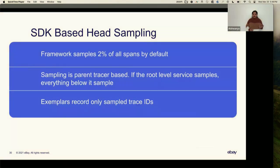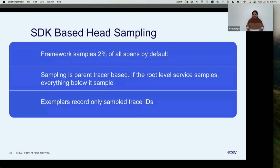We have adopted two types of sampling mechanisms. The first is SDK-based parent head sampling. When applications generate traces, even before sending them to the platform, they are sampled at 2% by default by the framework. The type of sampling is parent trace-based: the root service decides whether to sample a trace ID, and when the decision is made, it is passed on to all services in the call chain — all those services obey the parent's decision whether to sample or not.